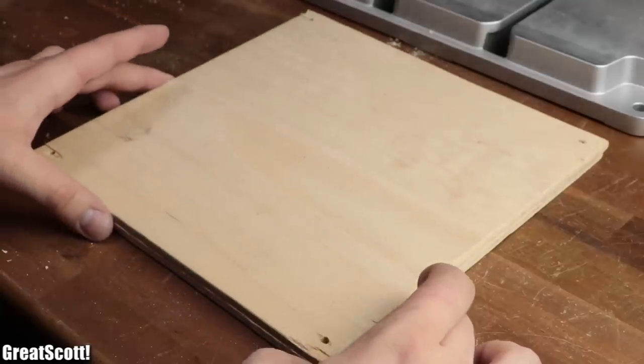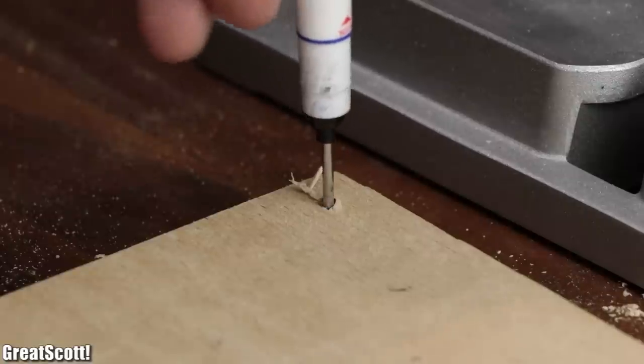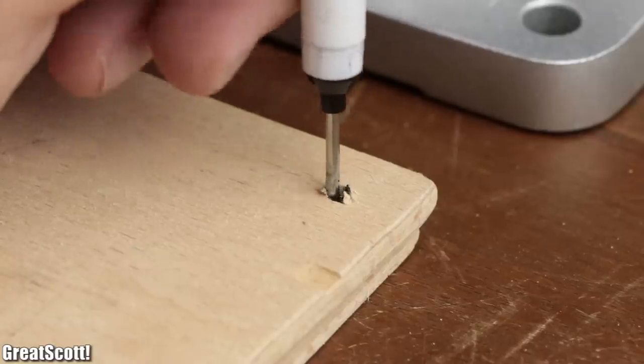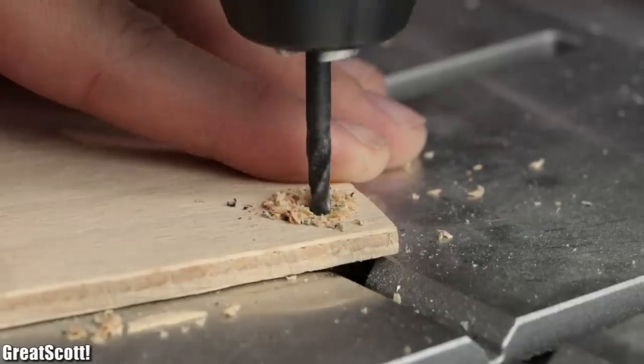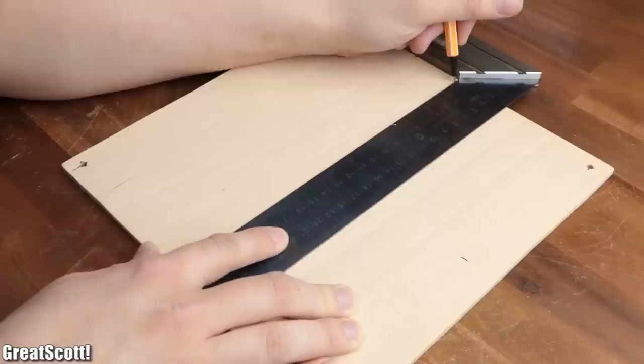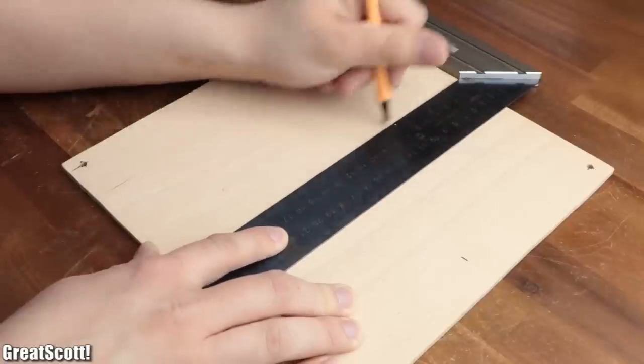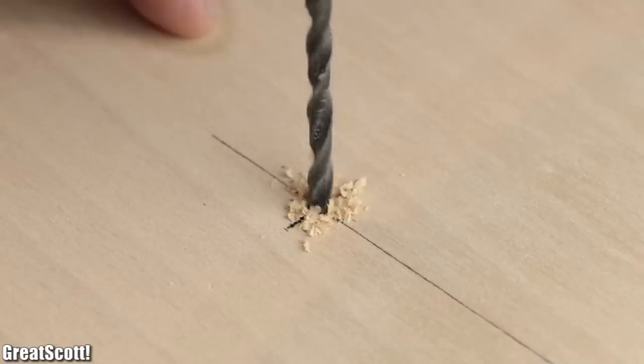I then used this plywood piece as a template to mark the necessary holes onto the other plywood piece and drilled the four holes through it as well. To finish the square shapes for now, I marked the center point on one of them and drilled a hole there.